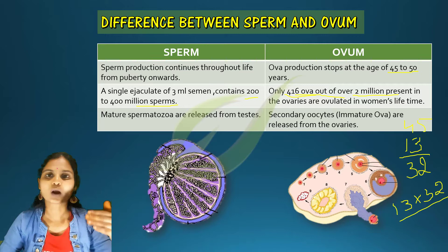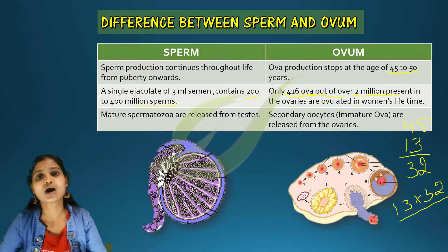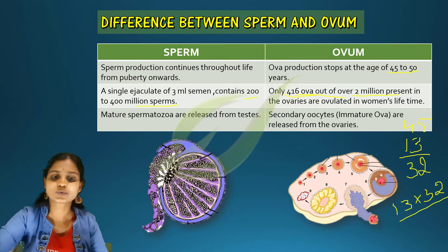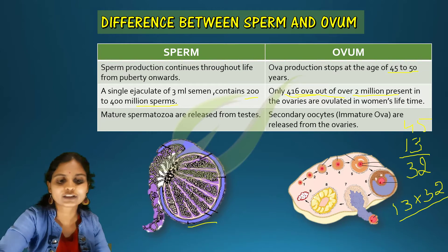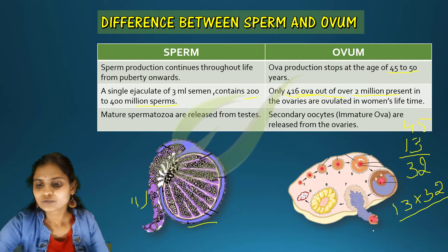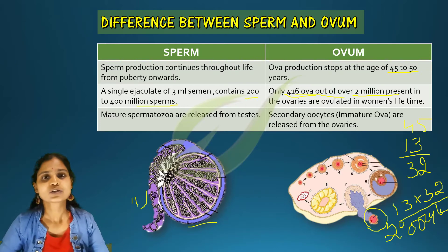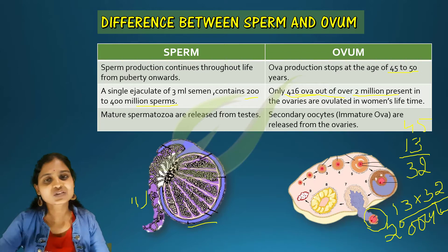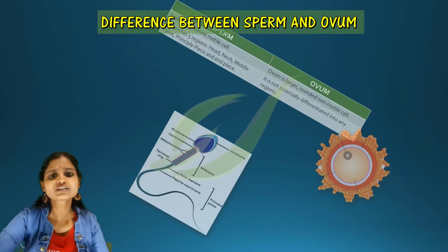Another difference is that matured spermatozoa are released from the testes — sperms are produced in the seminiferous tubules and mature sperms are released. Whereas in the case of the female, a secondary oocyte is released from the ovary, not a mature ovum, as it still has to undergo further meiosis.